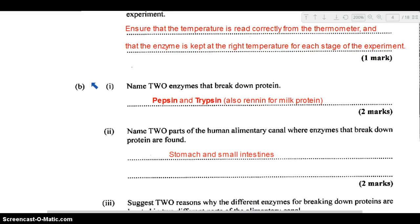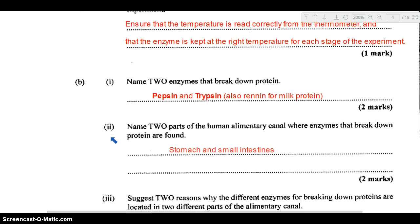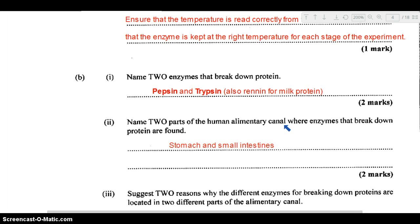Part B. Part one: name two enzymes that break down protein. The two enzymes are pepsin and trypsin, and you can also mention renin. Renin is a special protein enzyme for milk protein, very important in helping clot the milk protein. Part two: name two parts of the human alimentary canal where enzymes that break down protein are found. This would be in the stomach and the small intestines, where you would find the two enzymes we just mentioned above.